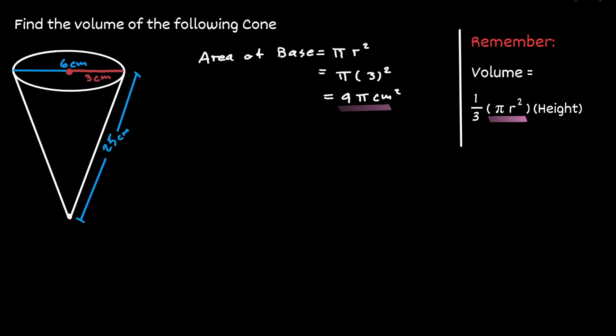What would happen if we draw a perpendicular line coming down from the center of the circle in the base? This vertical line can be seen as the height of this cone — that is the length that we need to find. We can think of this scenario as a right triangle, and then we can use the Pythagorean theorem to find the height of this cone.